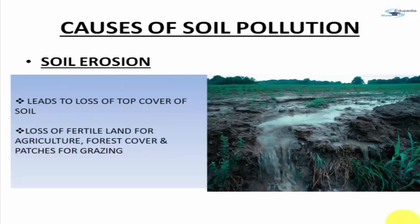The next cause of soil pollution is soil erosion. When there is rain and there are no trees, the soil is loose and gets washed away along with the water. With this soil, a lot of good nutrients required for good quality crops are also washed away, affecting crop quality. Soil erosion leads to loss of fertile land for agriculture, loss of forest cover, and also loss of patches for grazing animals.